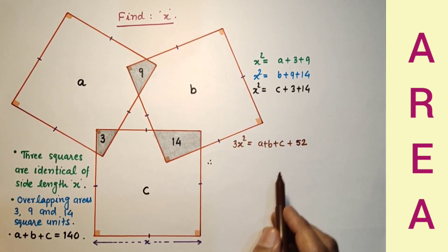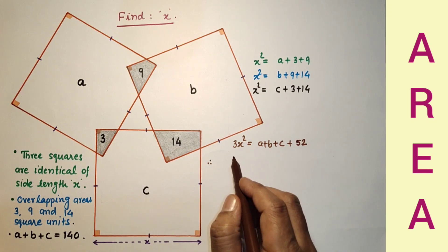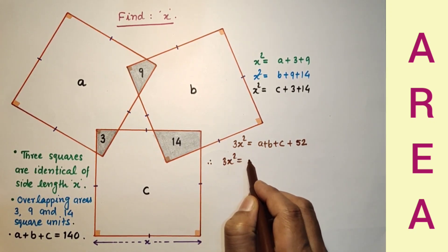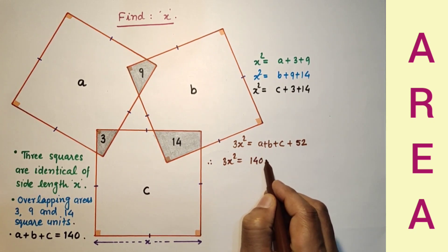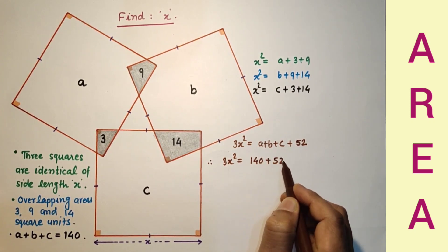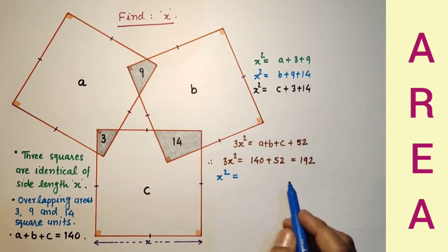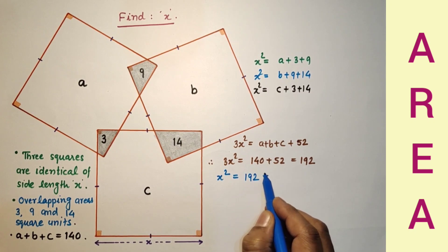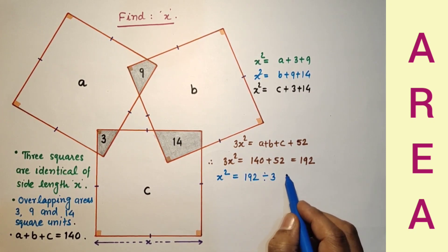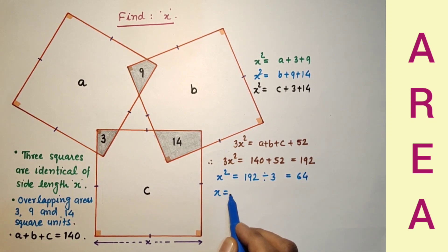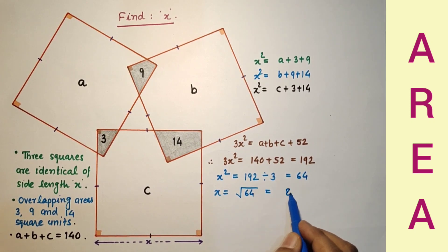But A plus B plus C is given as 140. So 3x squared equals 140 plus 52, which equals 192. Therefore x squared equals 192 divided by 3, and that equals 64. So x equals the square root of 64, and that is 8 units.